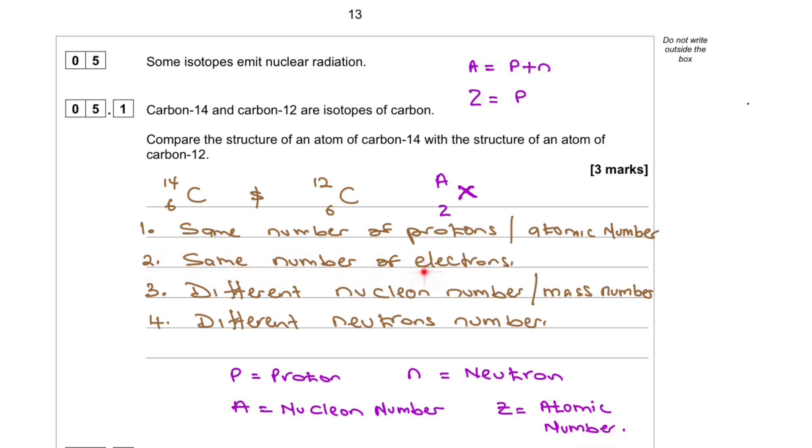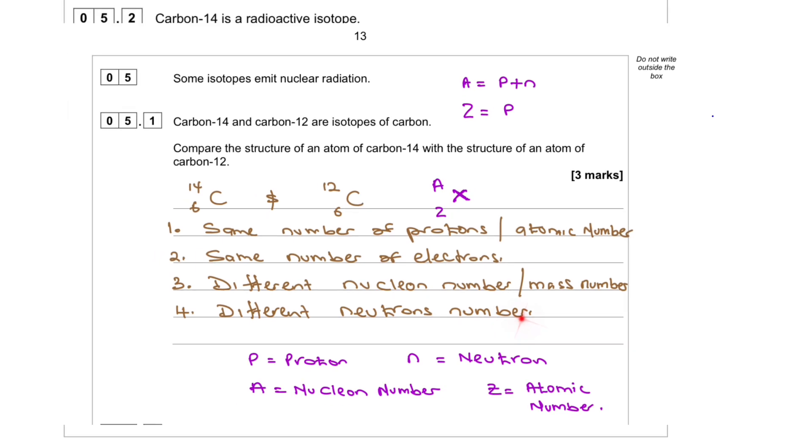2. Same number of electrons. Because it's an atom, atoms have the same number of electrons and protons. 3. Different nuclear number or mass number. Nuclear number is the mass number, which is the number of protons plus neutrons. 4. Different neutron numbers.